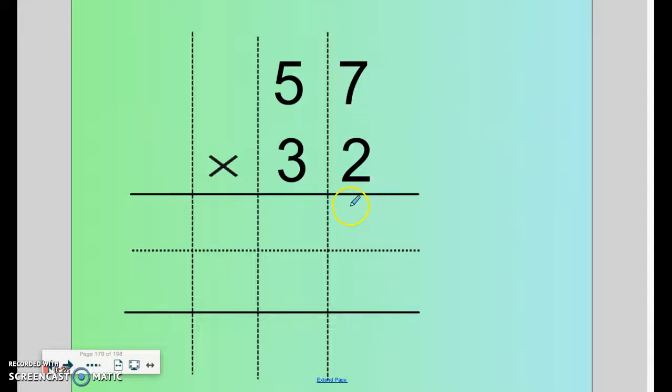2 times 7 is 14. So I put my 4 here and I carry my 1. 2 times 5 is 10 plus 1 is 11.